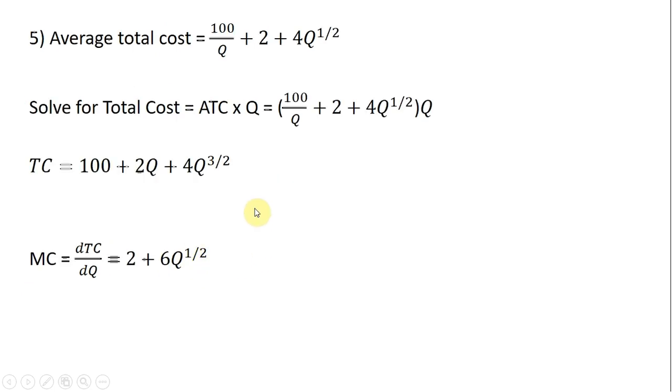A slightly more complicated example. Instead of having total cost, we're given the firm's average total cost equation. If average total cost equals 100/Q plus 2 plus 4Q^(1/2), we can still get marginal cost. The first thing we need to do is turn this average total cost equation into a total cost equation. We can do that by solving for total cost, which just equals average total cost times quantity.